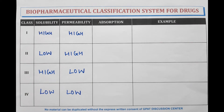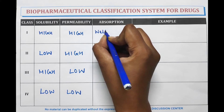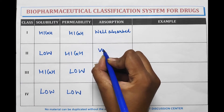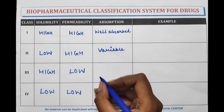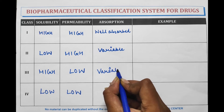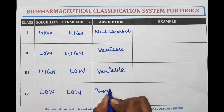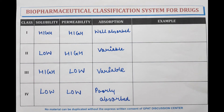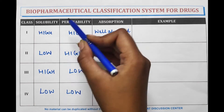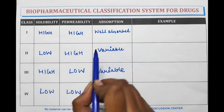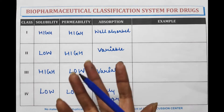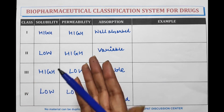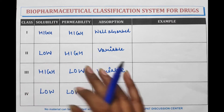What about absorption of these classes? Class one is very well absorbed. Class two has variable absorption. Class three drugs are also variable in absorption. Class four drugs are very poorly absorbed. The reason is that when a drug has high solubility and high permeability, it is well absorbed. When a class has low solubility and low permeability, it will be poorly absorbed. When either solubility or permeability is low while the other is high, absorption is variable.